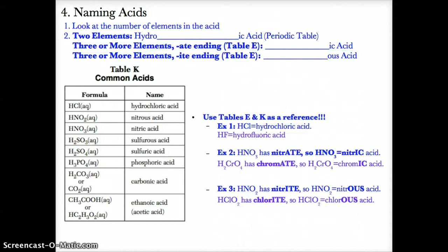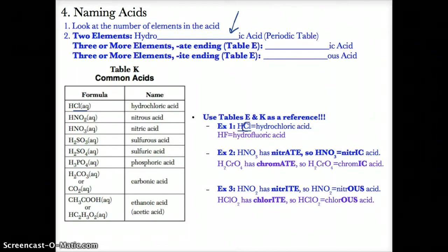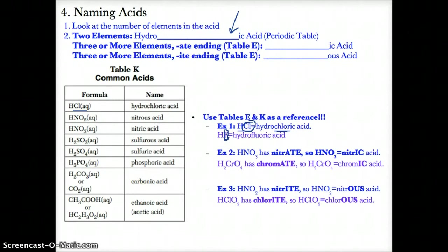Let's try more examples. HCl has only two elements, so name it hydro-blank-ic acid. The blank is for the ion after H+, which is Cl-. Since Cl- is the ion, we name it hydrochloric acid. For HF, you also have only two elements, so name it hydro-blank-ic acid. The ion after H+ is F-, so we name it hydrofluoric acid.